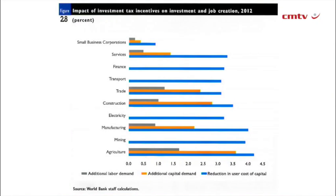The blue bars are reduction in the user cost of capital — our investment tax incentives reduce the user cost of capital, and we can see this across the board. The orange bars are the additional capital demand that derives from that. In some cases you will see that is zero — a statistical zero — meaning statistically we do not detect an impact of these tax incentives on investment, and that means they are not very effective.